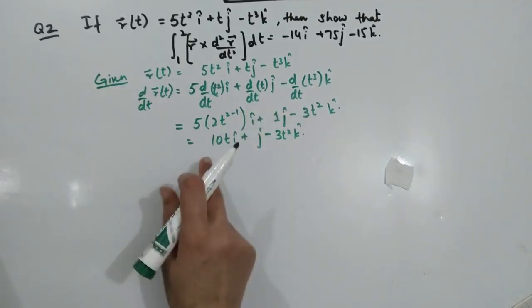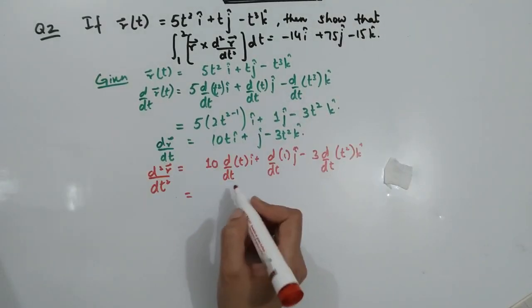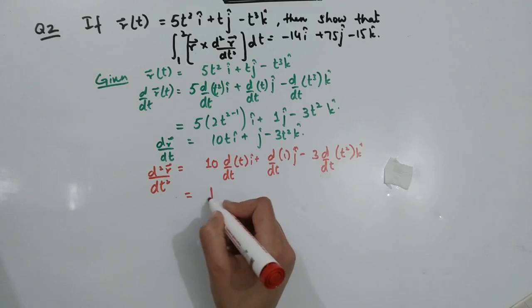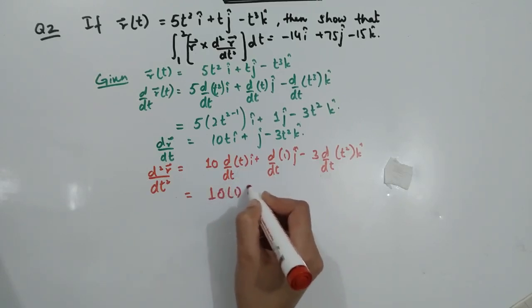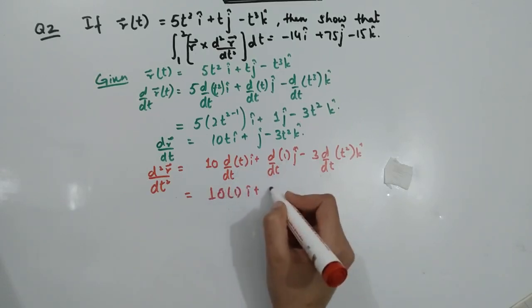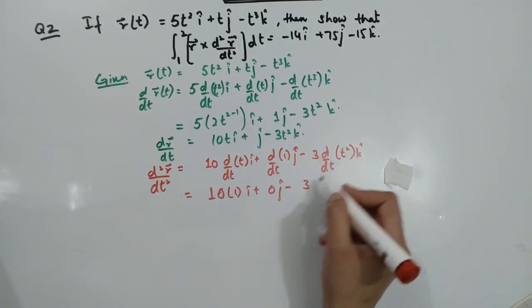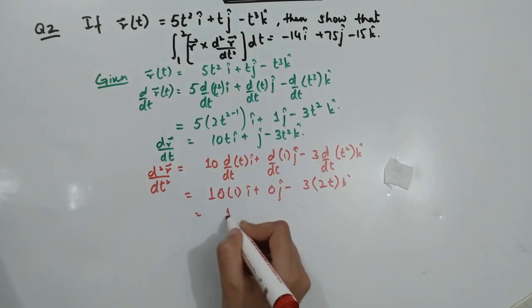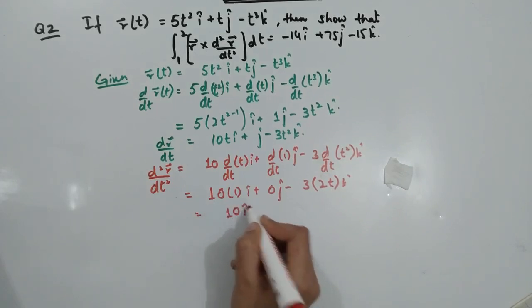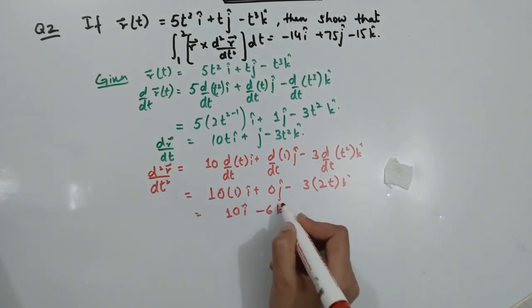This is the first derivative. Now take the second derivative: the derivative of 10T gives 10i, the derivative of 1 (constant) gives 0j, and minus 3T squared gives minus 6Tk. So the second derivative is 10i plus 0j minus 6Tk.